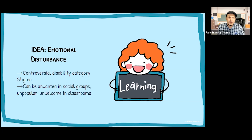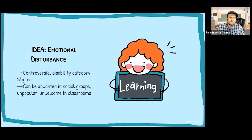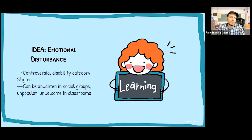More about emotional disturbance under IDEA: it's a controversial disability category with a stigma associated with it. Other exceptionalities, people might more readily attribute to things beyond someone's control. When there's emotional disturbance, there may be more of an assumption that it's something someone can just get past — perhaps not. Folks with EBDs can find themselves being unwanted in social groups, or unpopular or unwelcome in classrooms, stemming from this inability to create lasting positive peer relationships.